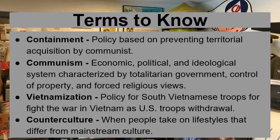What we're talking about with containment is setting up buffer zones and helping out countries that are friendly to us, essentially making a border between especially Europe and the USSR. Communism is an economic, political, and ideological system characterized by totalitarian government control, property, and forced religious views. There are different kinds of communism — calling someone a Marxist is complicated, whether you mean early Marx, late Marx, Leninism, or Trotskyism.